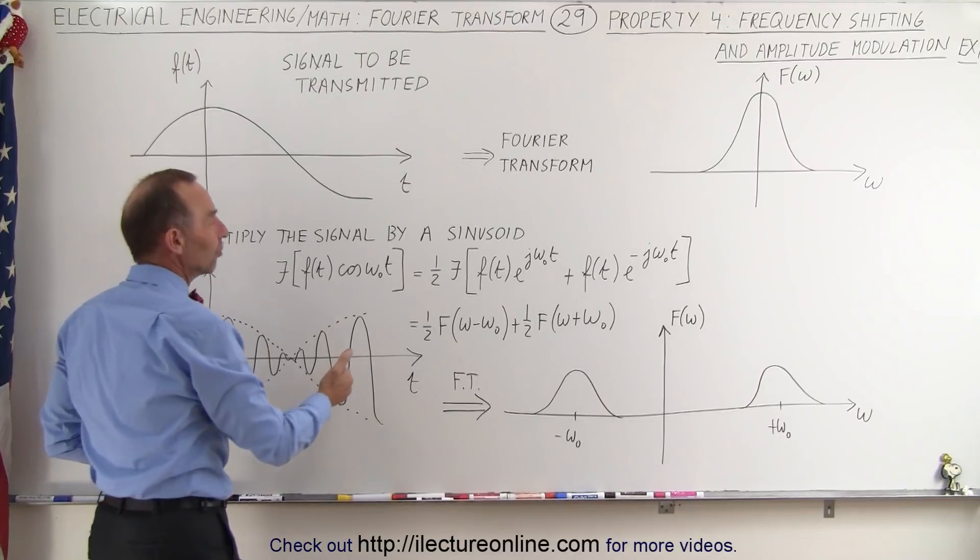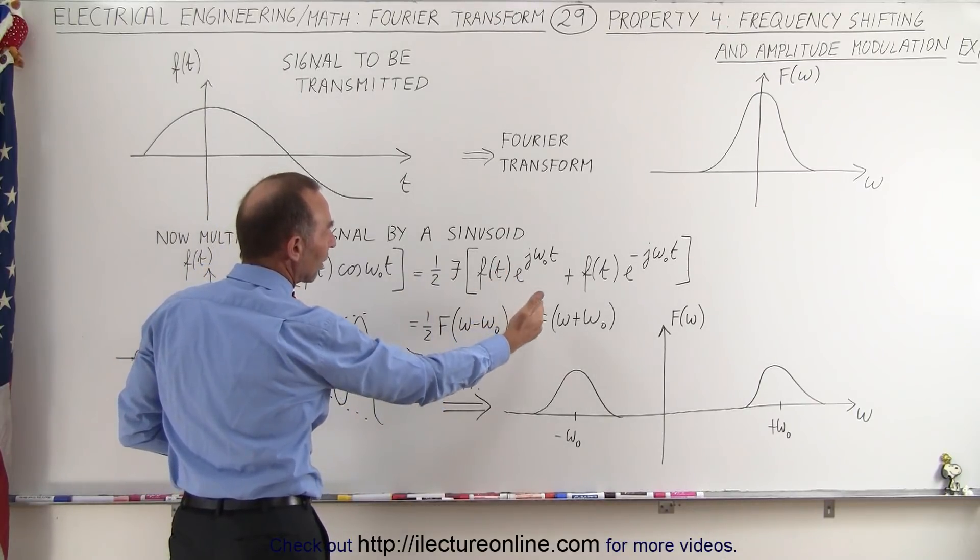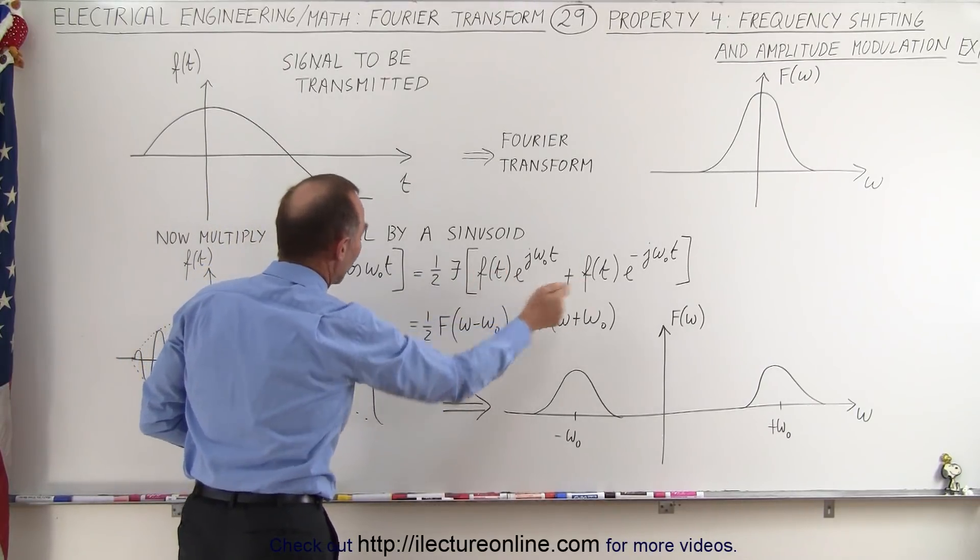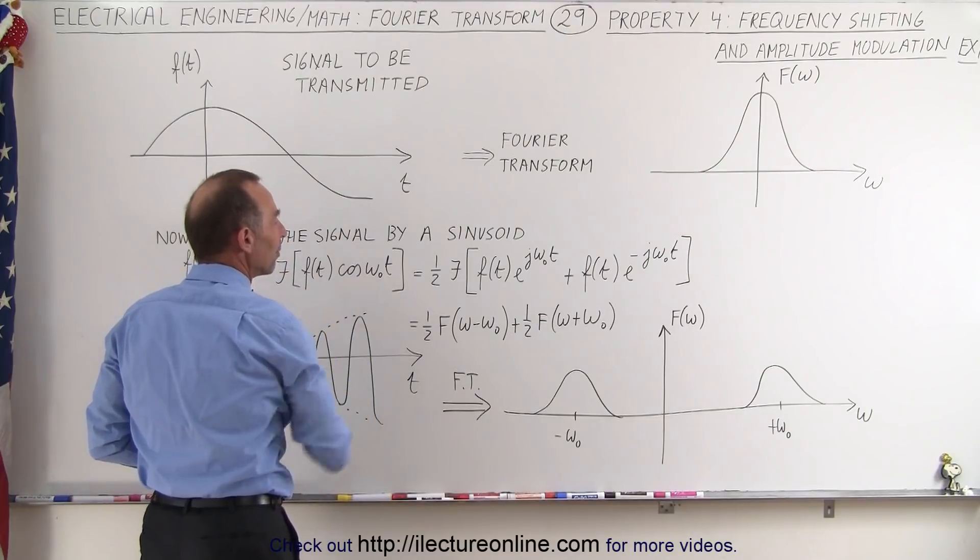Doing that, that will give us two Fourier transforms, one that shifted to the left and one that shifted to the right by this frequency, by the omega sub naught.